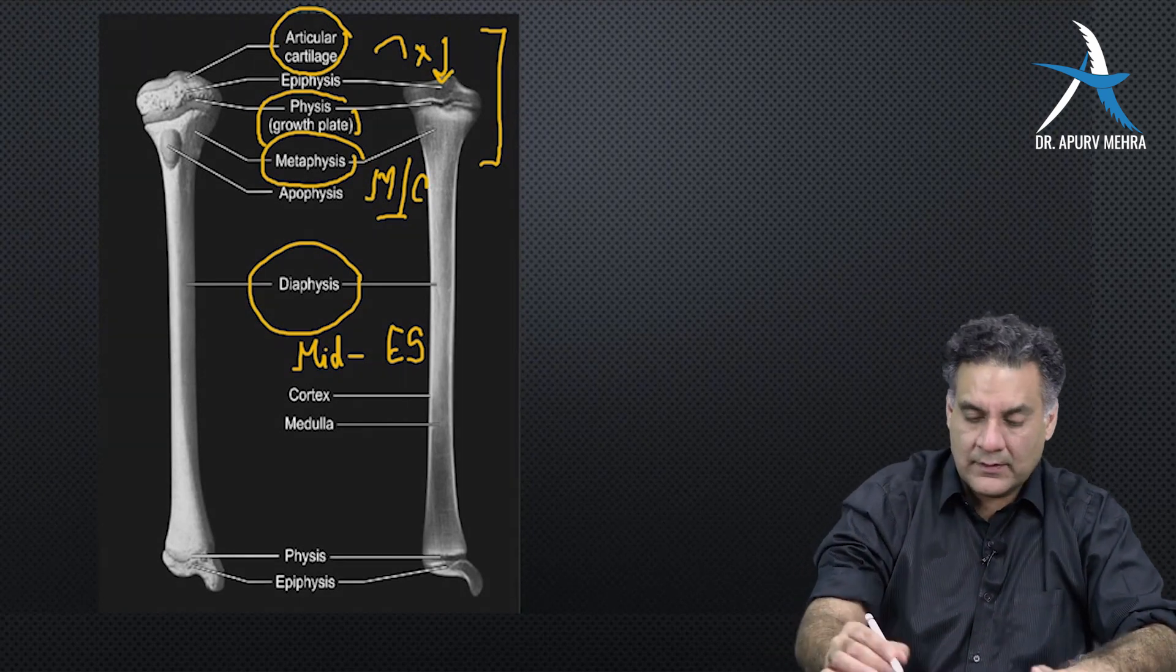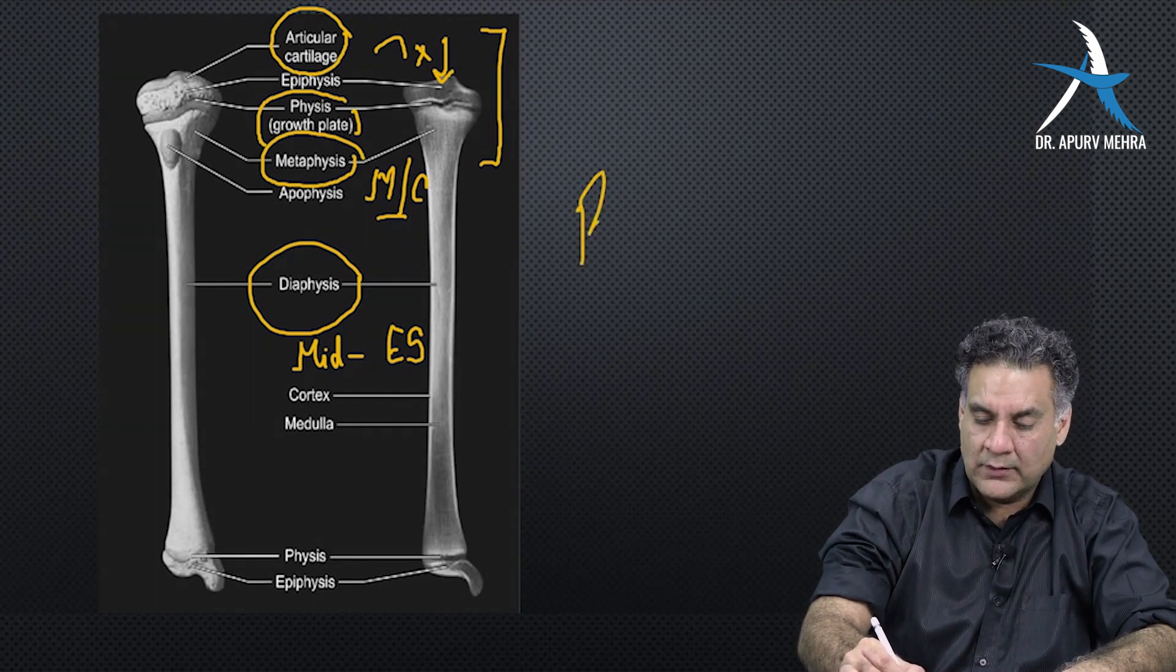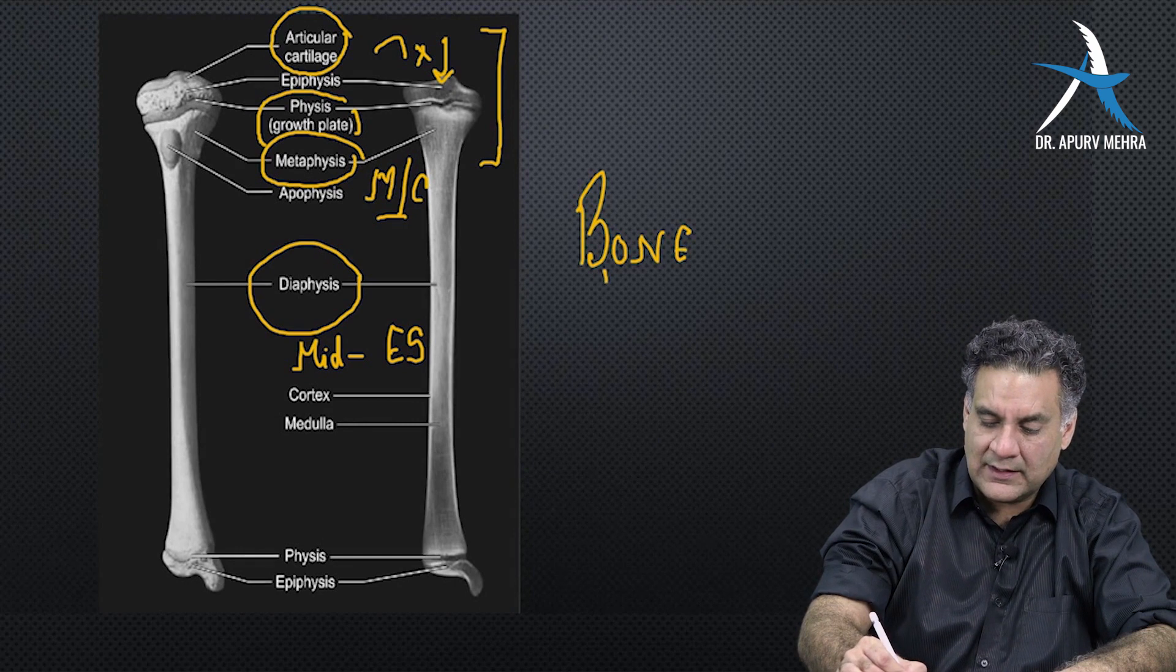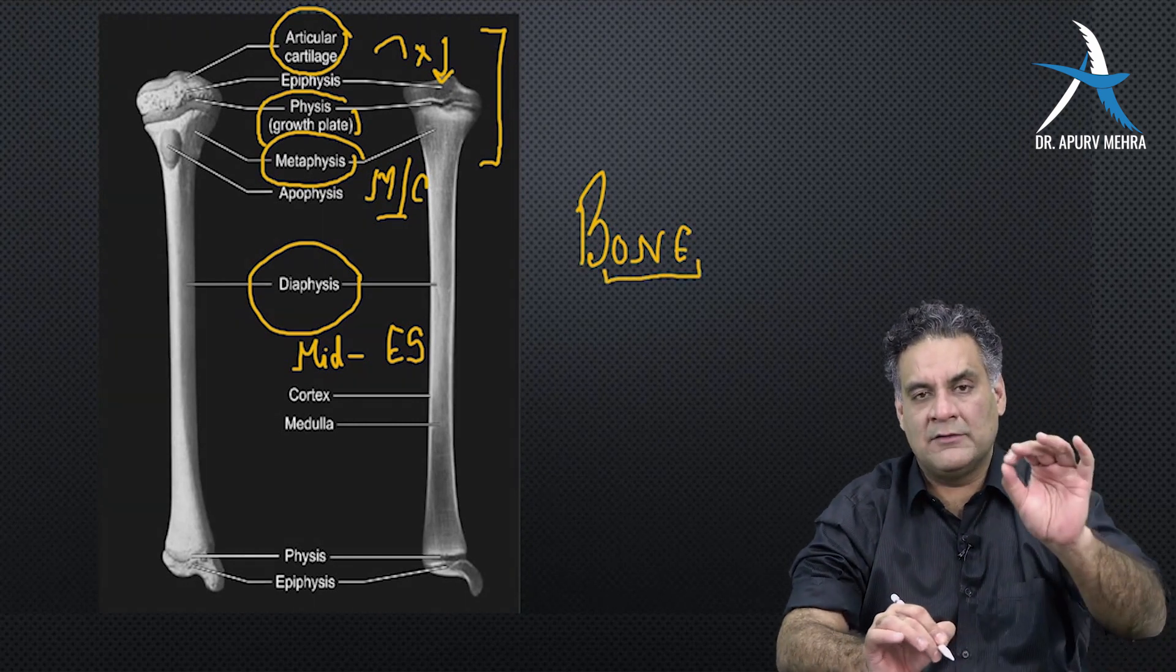Bone - look here - bone, that's how you write bone. It has the word one, so bone has type one collagen.